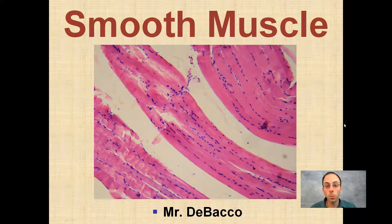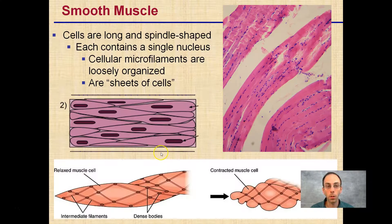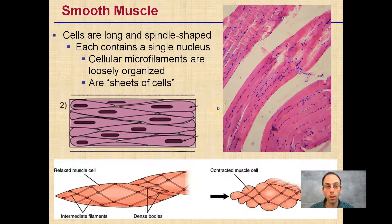This video lecture is going to look at smooth muscle in a little bit more detail. So smooth muscle, this is how it would look under a microscope. Cells are long and spindle-shaped. They each contain a single nucleus, and cellular microfilaments are loosely organized.